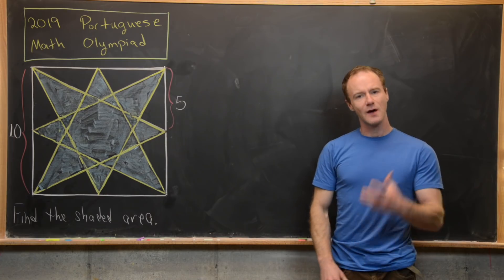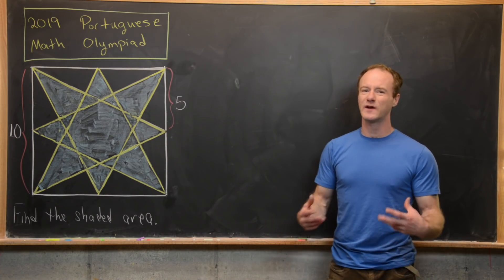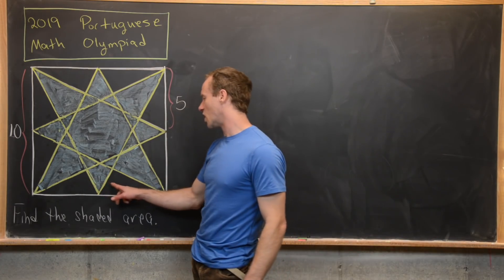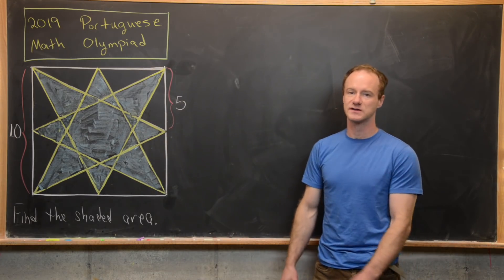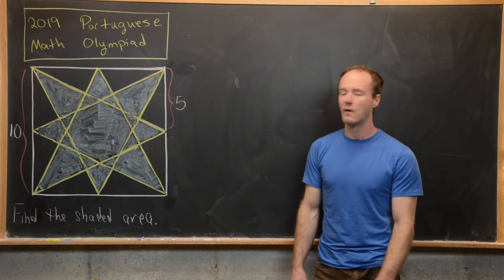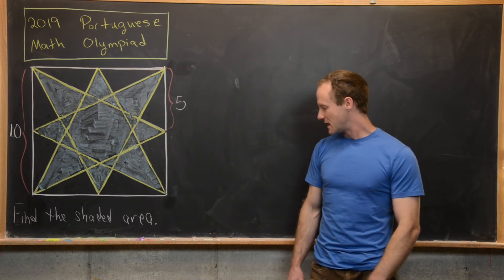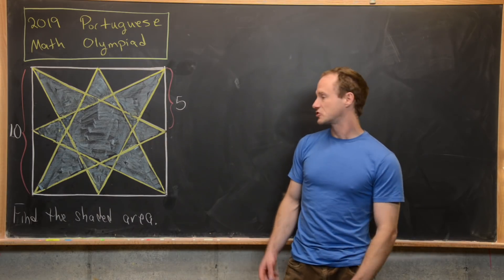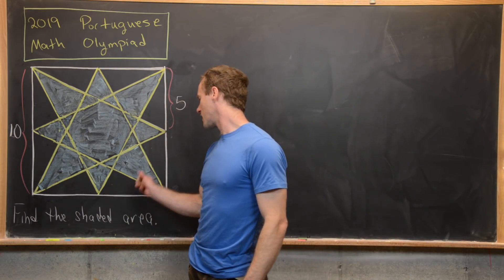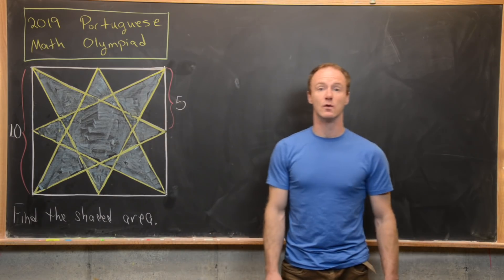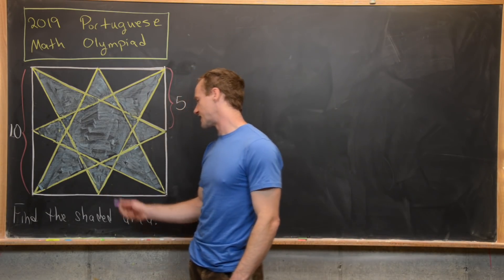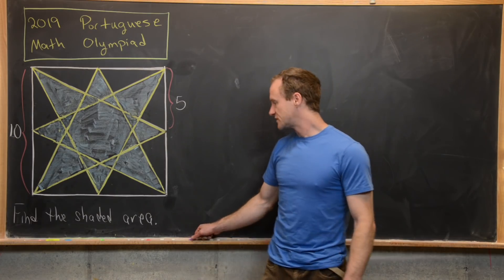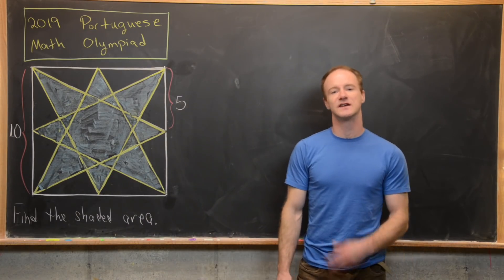A quick hint: find the area of the non-shaded parts instead of the shaded parts, then use subtraction from the total area of 100. The second hint is that by the symmetry built into this figure, the area of all eight triangles is equal — so if we find the area of one triangle, we're essentially done.